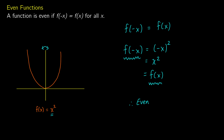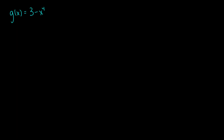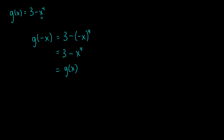Let's try a similar example with g of x equals 3 minus x to the 4th. To prove this is even, we start with g of negative x and show we get g of x back. We replace every x with negative x, giving us 3 minus negative x to the 4th. Negative x times negative x is positive, and multiplying two positives gives another positive, so we get 3 minus x to the 4th, which equals our original g of x. So this function is even.